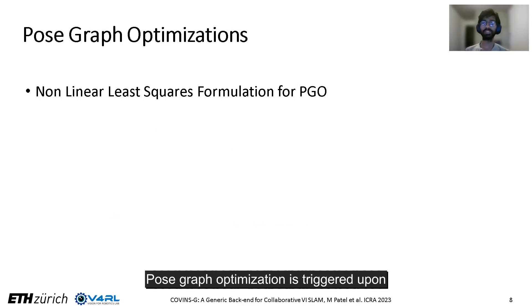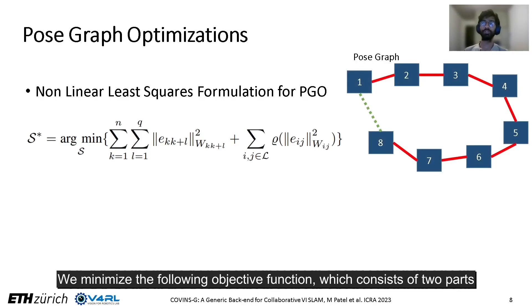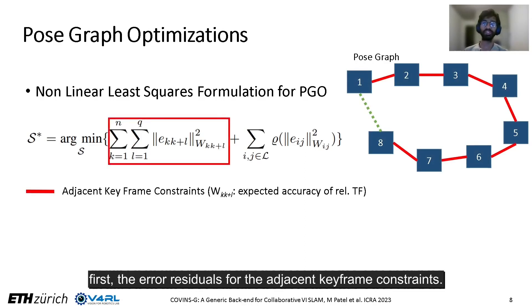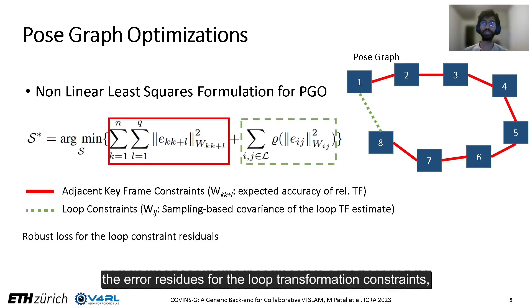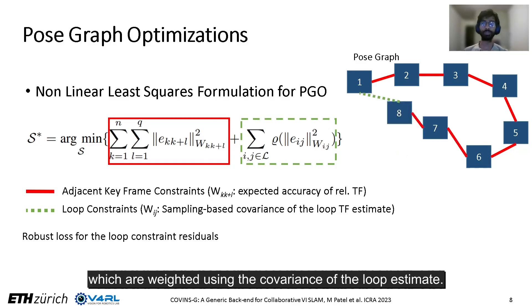Pose graph optimization is triggered upon successful loop transformation computation. We minimize an objective function which consists of two parts: first, the error residuals for the adjacent keyframe constraints, weighted using the expected accuracy of the relative poses; and second, the error residuals for the loop transformation constraints, which are weighted using the covariance of the loop estimate.